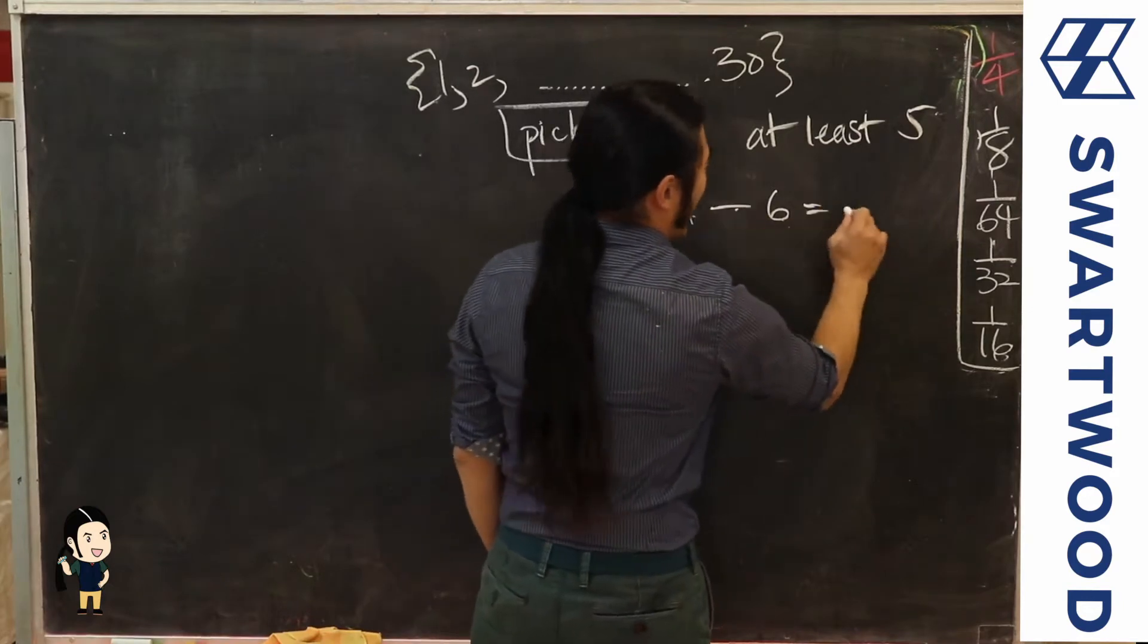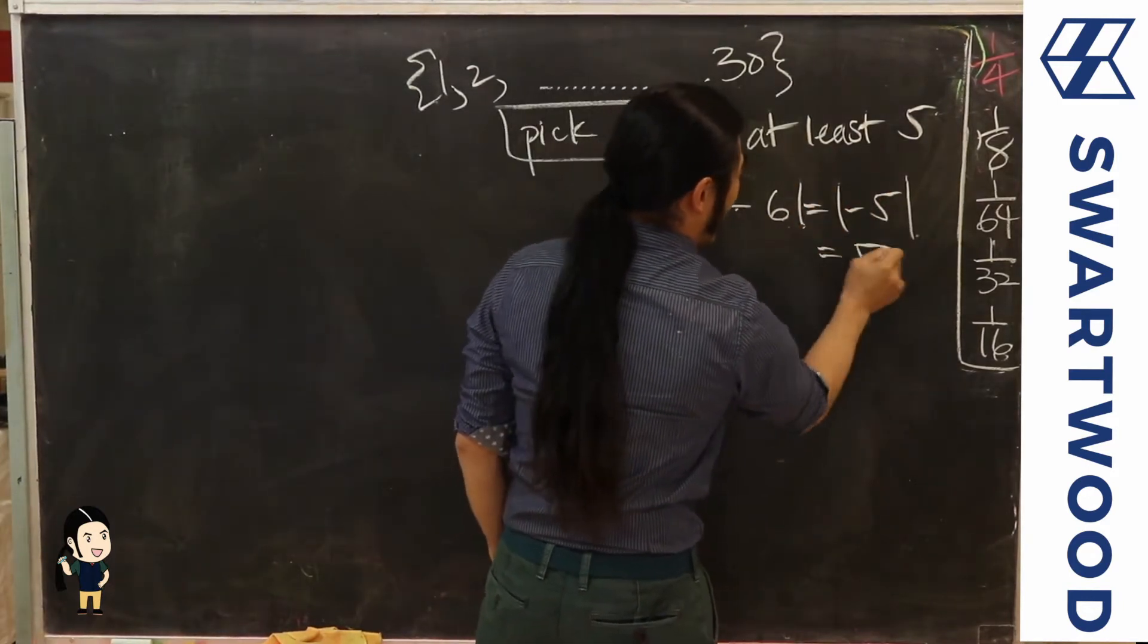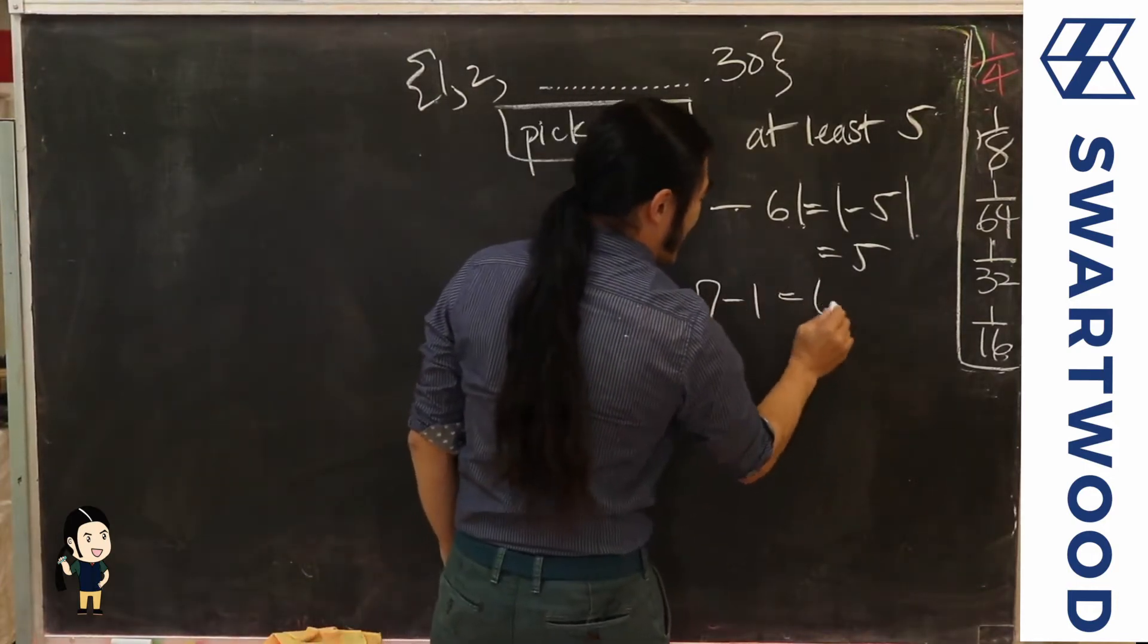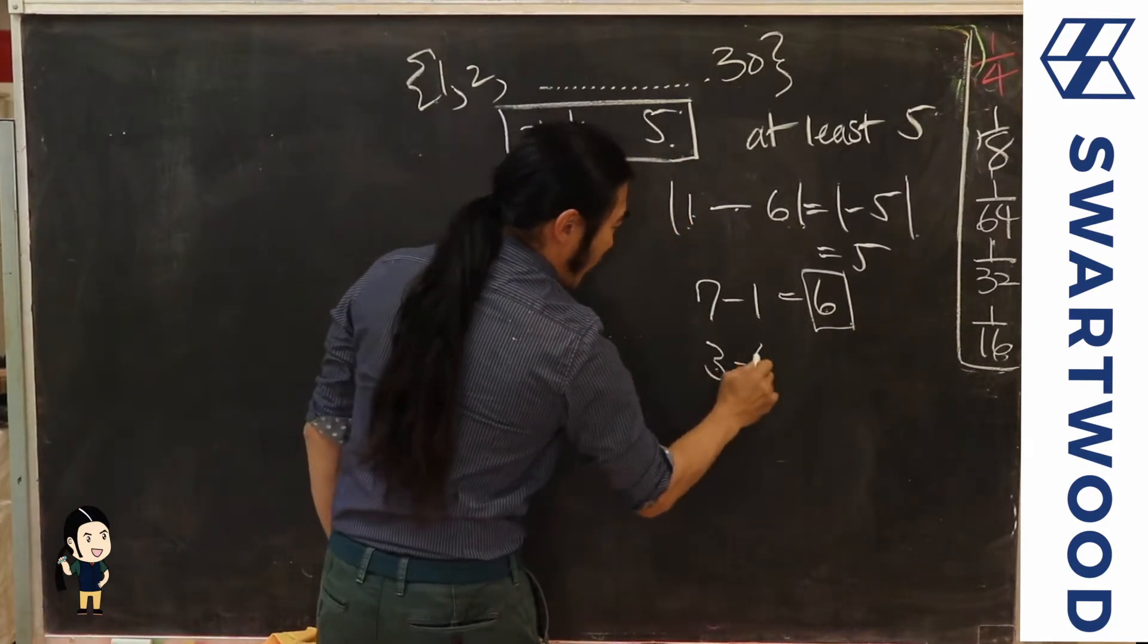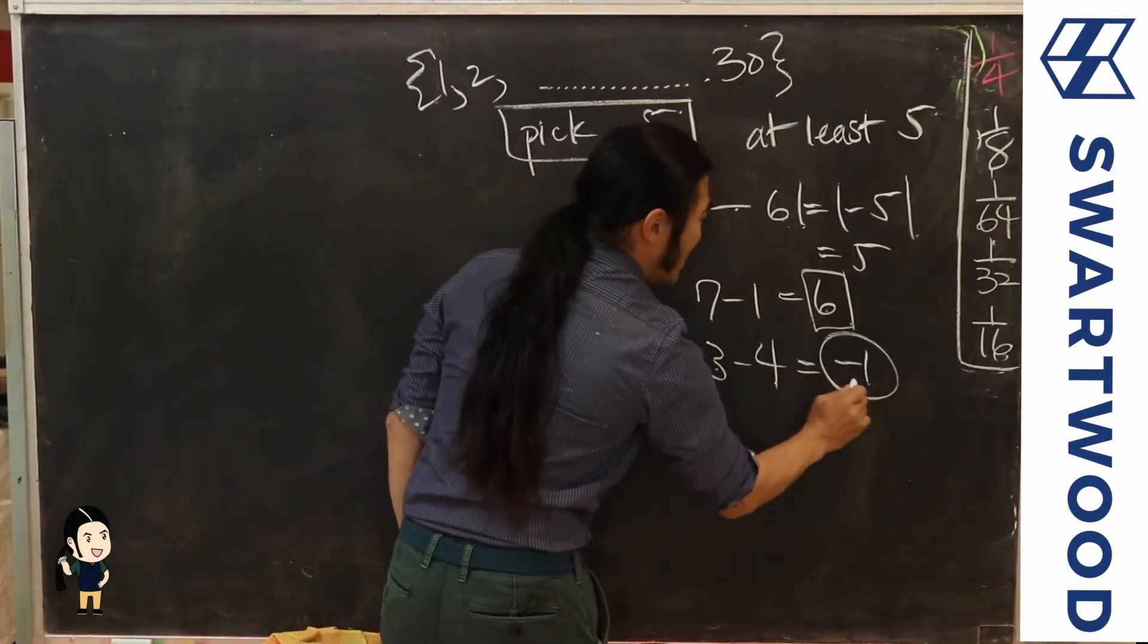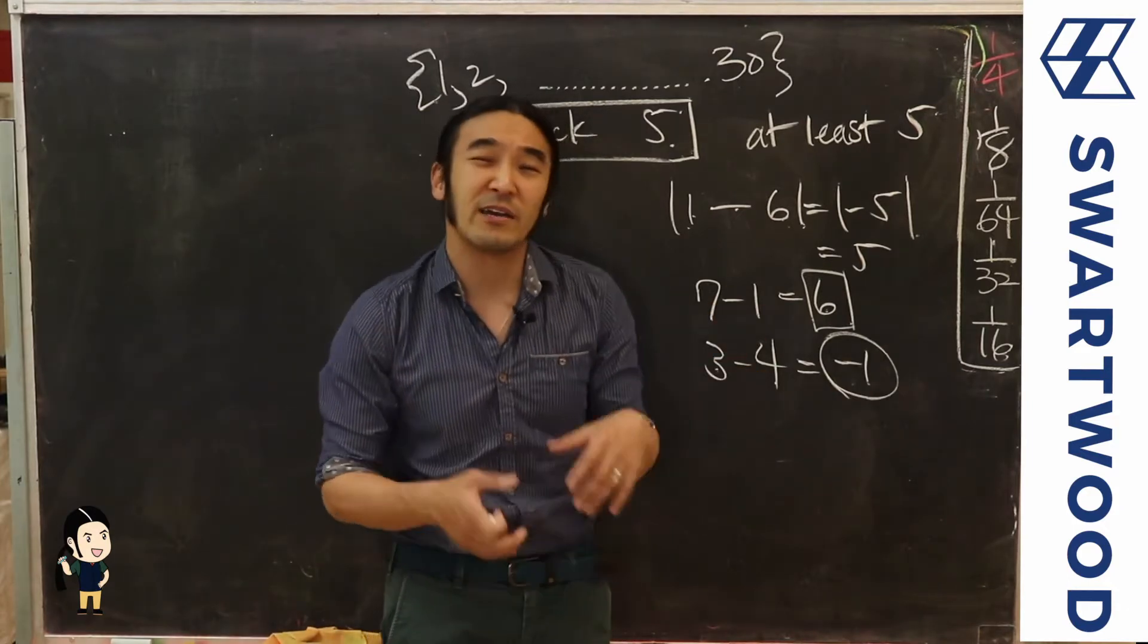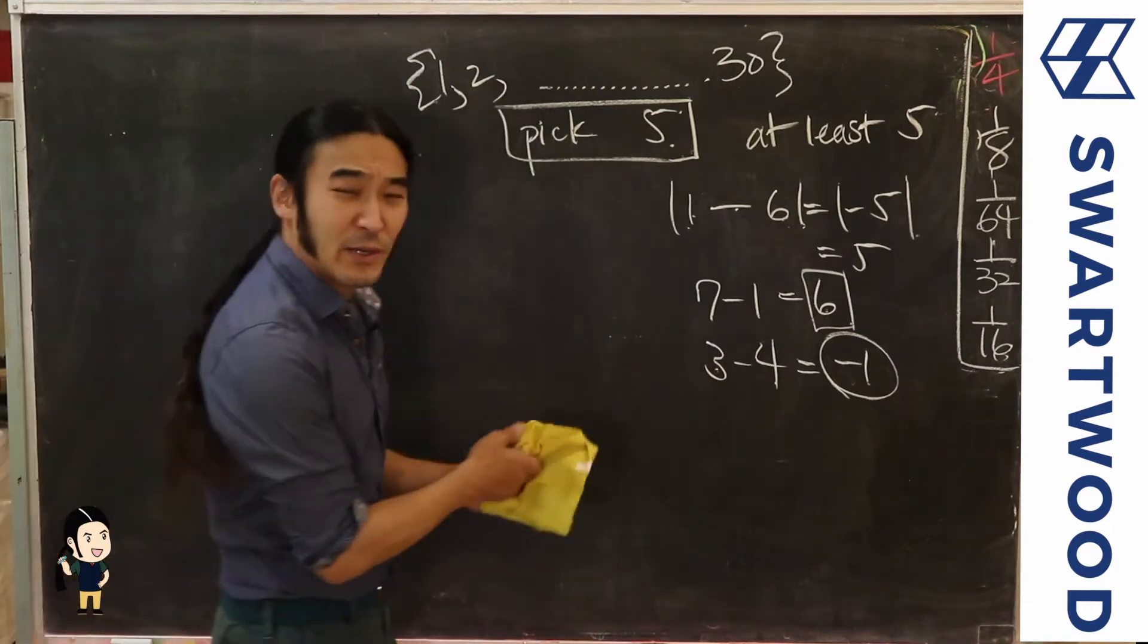What I mean by that is if you pick the numbers one and six, that's okay because when you take the difference between them, the absolute value is going to be five. The difference between seven and one is six, that also works. But the difference between three and four is one, that's not going to work. You want to take two numbers and when you take the absolute value of the difference, you want it to be at least five.